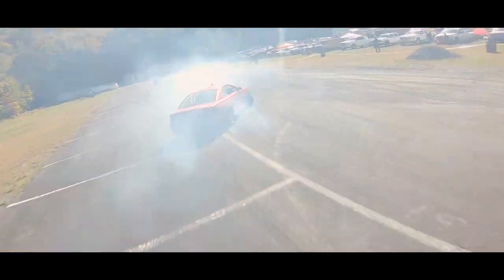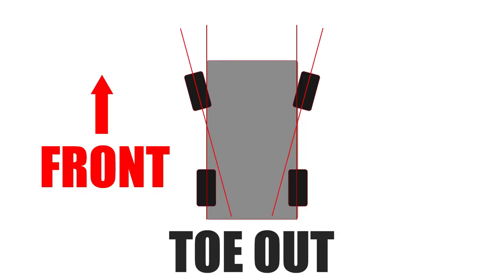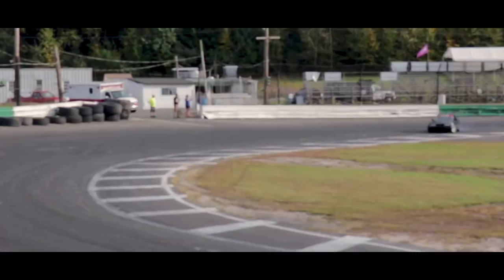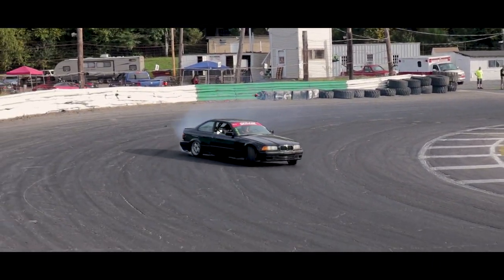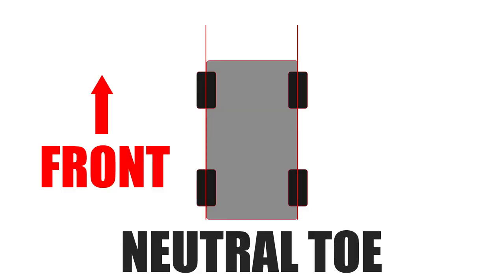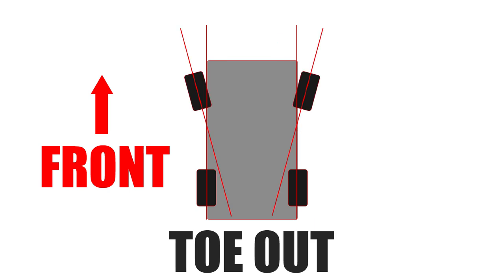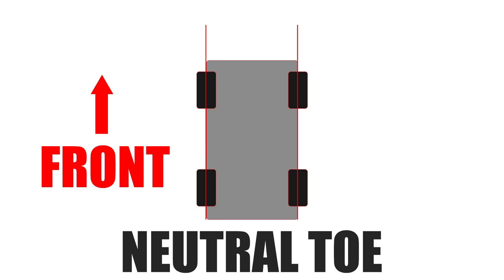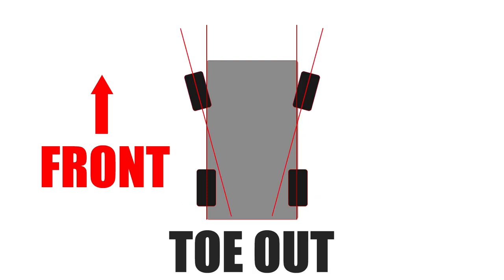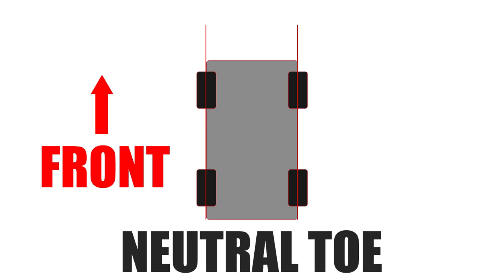Now it comes down to toe. You could toe in, toe out, or run zero toe. Toe is the measure of how far inward or outward the leading edge of the tire is facing when viewed from the top. As you can see in these pictures, this is neutral toe, this is toe out, and this is toe in. Toe in is when the tires point towards each other, and toe out is when the tires point away from each other. Running some toe out will increase your steering angle at full lock more than it would with zero toe or toe in.